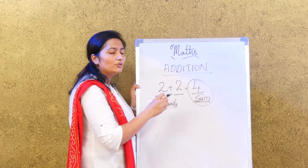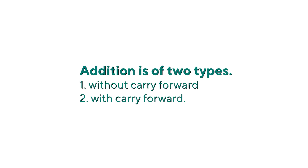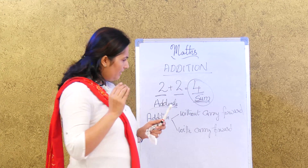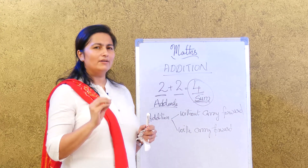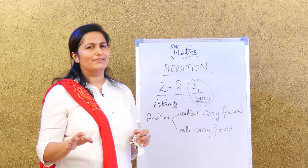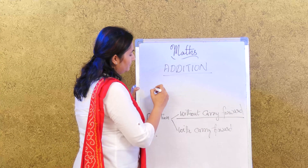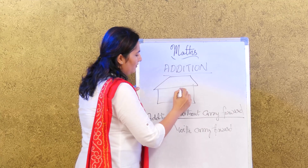Now we will go on to addition itself. The first type of addition we are going to learn is without carry forward — those are the easy sums. But that does not mean the others are difficult, so you should not get scared. Whatever you practice and perfect, you will never forget all your life. So let's first look at without carry forward — they are simple and easy. Let's take some examples from your textbook, page number 72. Let's go back to our place value house: ones and tens.